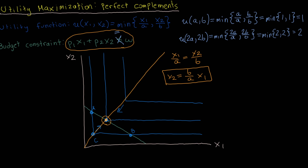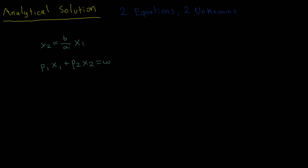Now I'd like to describe the analytical solution to this utility maximization problem. There are two equations and two unknowns. The two unknowns are the demand for good 1, x1, and the demand for good 2, x2. The first equation corresponds to the line from the origin passing through all the kinks of the indifference curves: x1/a = x2/b. The second equation is just the budget line holding with equality.